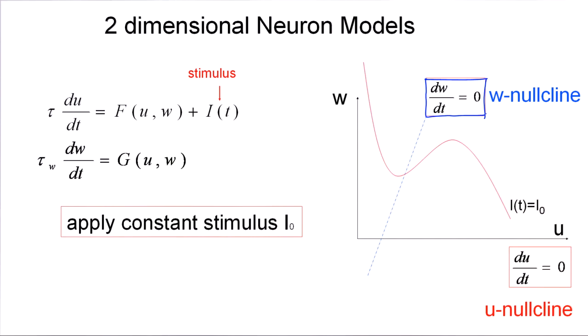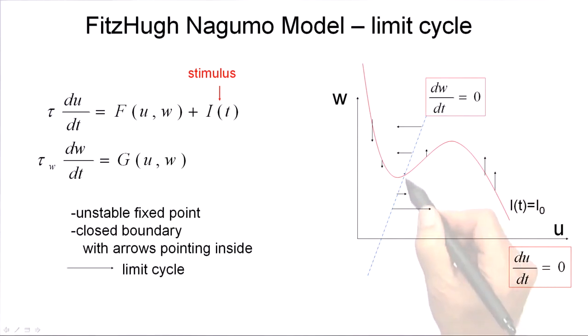And if the curve is shifted upwards, what happens is that at some point, the fixed point loses stability. Now, if the fixed point is unstable, and moreover, we can construct a closed boundary around it, such that all arrows point inwards, then we know that there must be a limit cycle, which corresponds to repetitive firing of the neuron. So the neuron fires repetitively, periodically, while on this limit cycle.